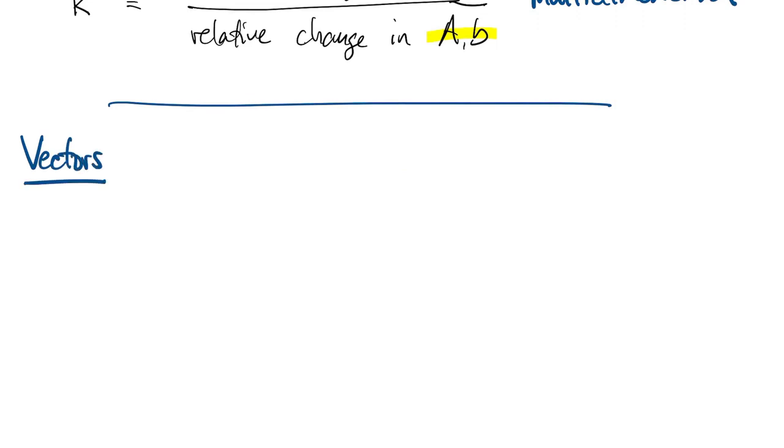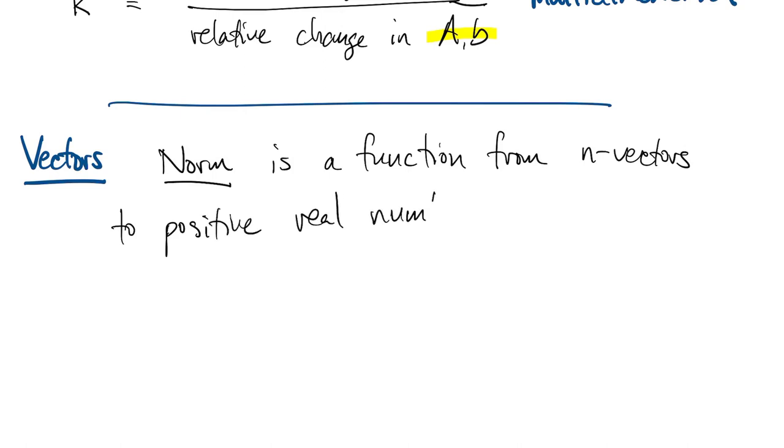Let's start with the vectors. A norm on vectors is a function from the vectors to the positive real numbers that satisfies some key properties. The norm of any non-zero vector is greater than zero. Next, the norm of the zero vector is zero.